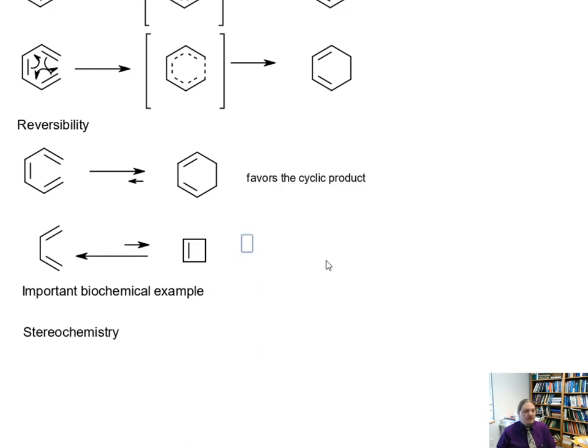Even though we've converted a pi bond to a sigma bond, this cyclic product has angle strain that is relieved when the reaction runs in reverse.